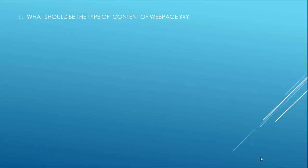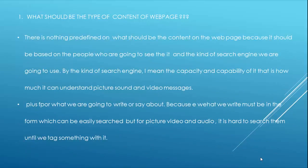What should be the type of content on a web page? There is nothing predefined on what should be the content on a web page, because it should be based on the people who are going to see it and the kind of search engine being used — that is, its capacity and capability to understand picture, sound, and video messages. Also, what we write must be in a form which can be easily searched, but for picture, video, and audio, it is hard to search them unless we tag something with them.